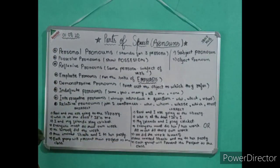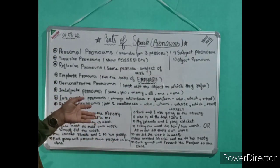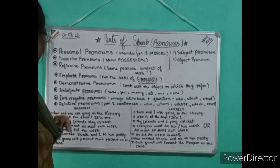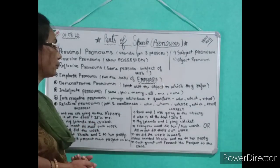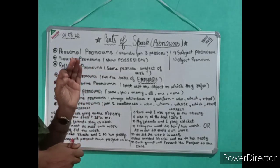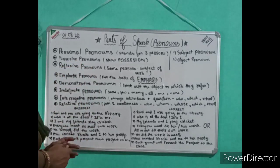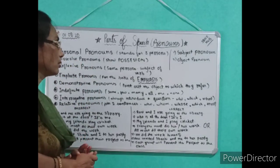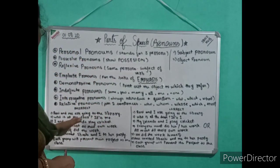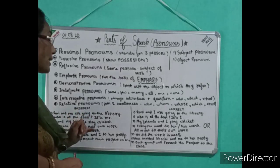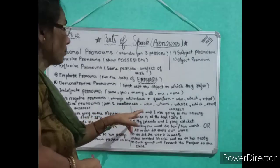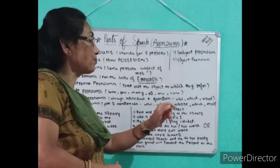Is it clear? Now I conclude this video with some examples. 'Ravi and me are going to the library' — wrong. Correct: 'Ravi and I are going to the library.' These are the silly mistakes you have to keep in mind. 'Who is at the door? It's me.' — No, it should be 'It's I' or 'I am.' 'I and my friends play cricket' — wrong. Correct: 'My friends and I play cricket.'